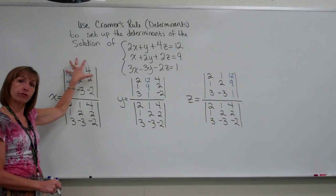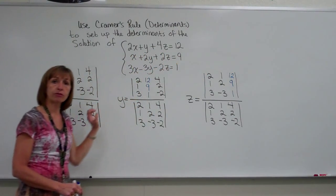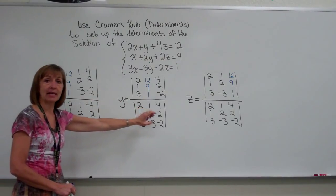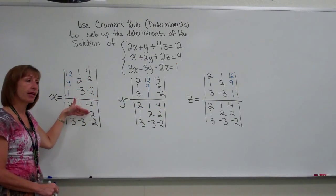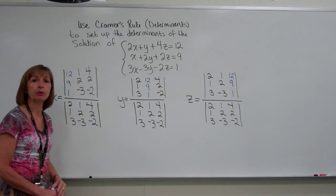we'd find the numerical value for the determinants of each of the numerators, and we'd also find the value of the determinant that's in the denominator, and either simplify the fractions or divide them out if they have an integer value to finally report our solution.